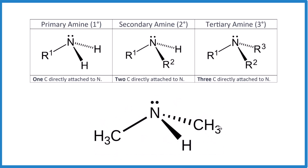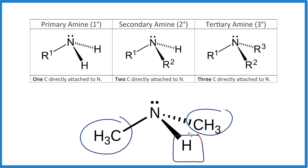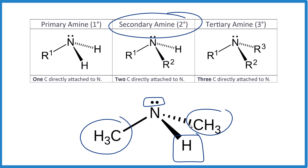One last one — what type of amine is this? Two carbon groups and our hydrogen here — that's going to be a secondary amine. Remember, this lone pair is pushing things down. We get that trigonal pyramidal molecular geometry for these amines. That's it — Dr. B looking at the differences between the primary amine, secondary amine, and tertiary amine. Thanks for watching.